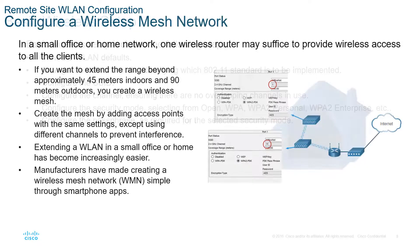We may have an environment with multiple access points, so we want to make sure we're checking channel coverage so we don't have multiple devices on the same wireless channel. Normally, if we're looking at extenders, that's going to be anything outside 45 meters indoors, or anything over 90 meters outdoors — that's when we want to add extenders.